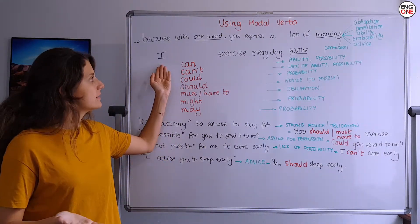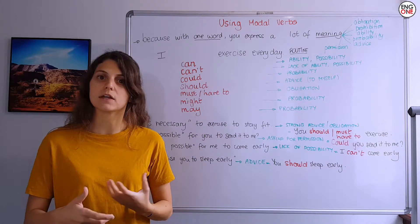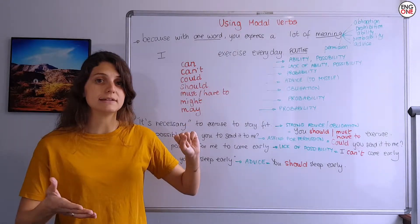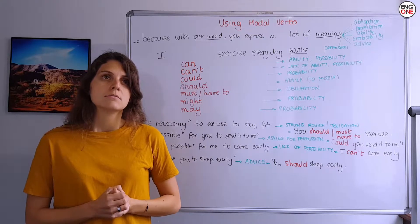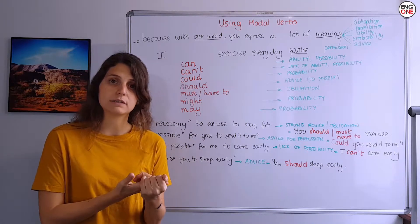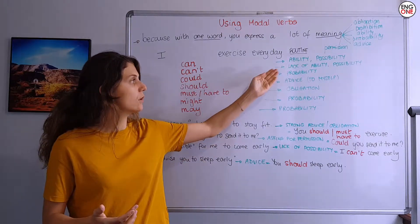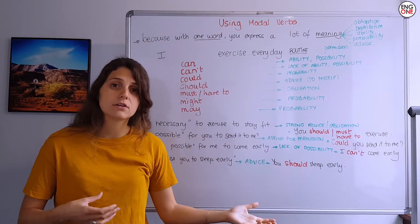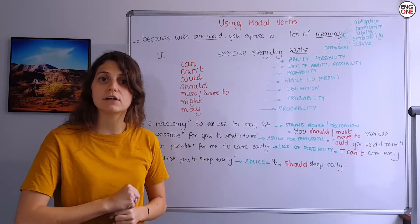This sentence: 'I exercise every day' — this is to express routine. It's present simple. Now, if I want to express possibility or ability: 'I can exercise every day.' That means either I'm fit enough to exercise every day, or I have enough time for it. It's possible. 'I can't exercise every day' — this time we have a lack of ability or lack of possibility.